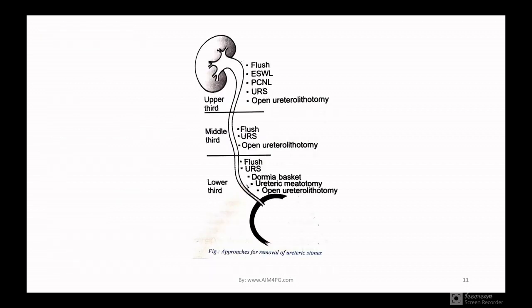The approach to removal of ureteric stone depends on location. If the stone is in the upper third of the ureter: flush, ESWL, PCNL, URS (ureteroscopy), or open ureterolithotomy. If in the middle third: flush, URS, or open ureterolithotomy. If in the lower third: flush, URS, Dormia basket, or ureteric meatotomy. So you have an idea of how to approach ureteric stones depending on their location.